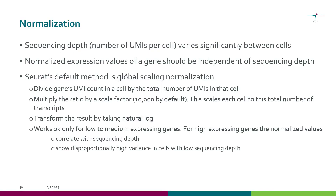The number of UMIs per cell varies significantly between cells, and hence gene expression values can also vary even if the actual gene expression level was the same. Normalized gene expression values should be independent of sequencing depth, or the total number of UMIs per cell. CERA's default method is global scaling normalization, which simply divides a gene's UMI count by the total number of UMIs in that cell.